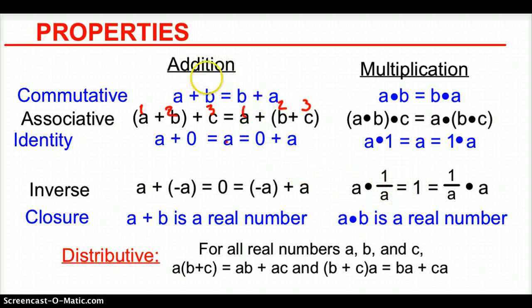Now the closure property all it is is if you add two numbers together it's going to be a real number for addition. Same thing with multiplication. If you multiply two numbers together it's going to be a real number. Distributive we've seen the distributive property already in FOIL but we would just multiply that A to the B and that to the C. Doesn't matter if it's in front or if it's in back.